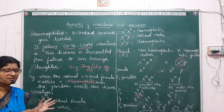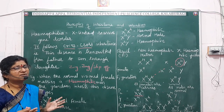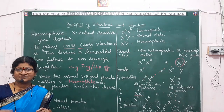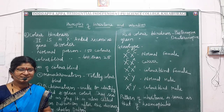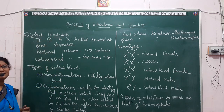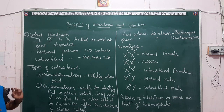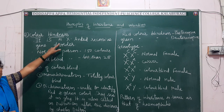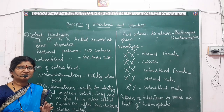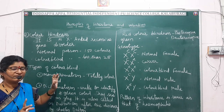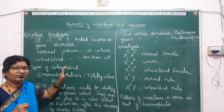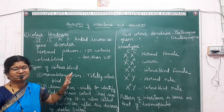Now let us see color blindness, which is also an X-linked recessive gene disorder where the defective gene is present on the X chromosome. A normal person can see 150 colors in bright light, whereas a color blind person can see only 25 or fewer colors.